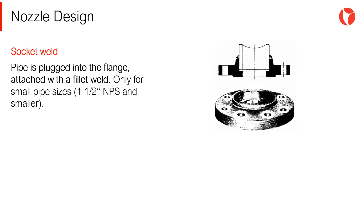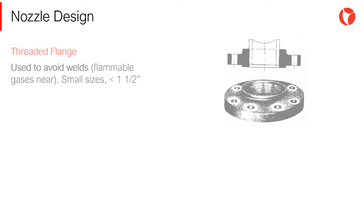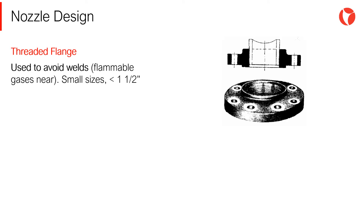Socket weld flange is often used only for small pipe sizes — 1.5 inches nominal pipe size and smaller. Lap joint flanges use a stub end that is butt-welded to the pipe. The flange bolts do not have to be carefully aligned before welding, which simplifies the installation.